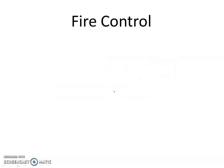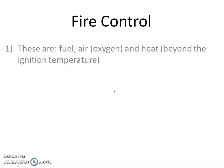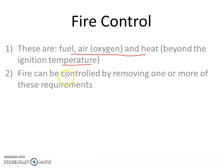Now, fire control. If you want to control fire, we have to cut down one of the three requirements: fuel, air, and heat beyond the ignition temperature. Fire can be controlled by removing one or more of these requirements. If we remove the fuel, fire can be easily controlled. If we cut down the oxygen supply, fire may be controlled. And if we bring the temperature below the ignition temperature, fire can be easily controlled.